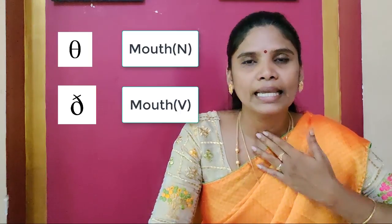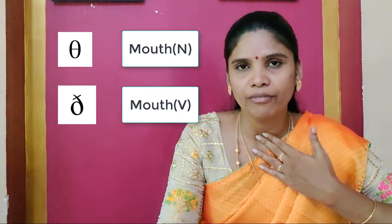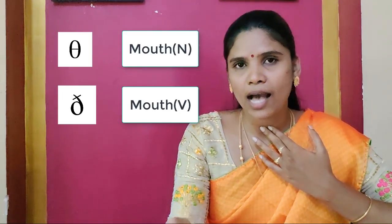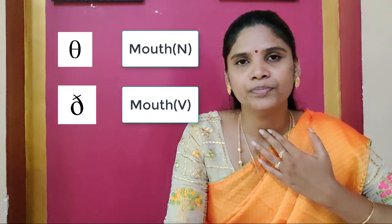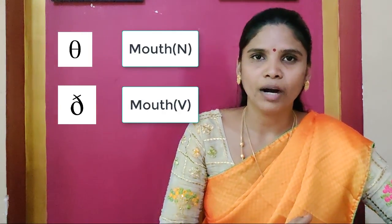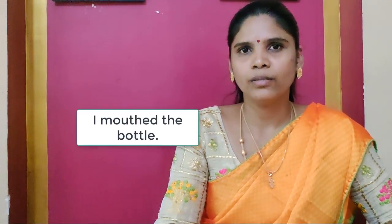We move to the minimal pairs. Minimal pairs will help us get the difference between voiced and unvoiced sounds. The pair of sounds will be differentiated with minimal pairs — they are very effective to teach the difference between the pair of sounds. Take this word: mouth. I do not vibrate my vocal cords. Mouth — in the verb form, it has the /ð/ sound. We can use the word mouth as a verb: 'I mouthed the bottle' — I captured the bottle with my mouth.